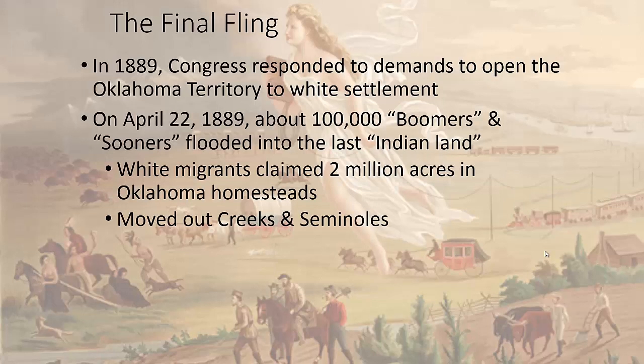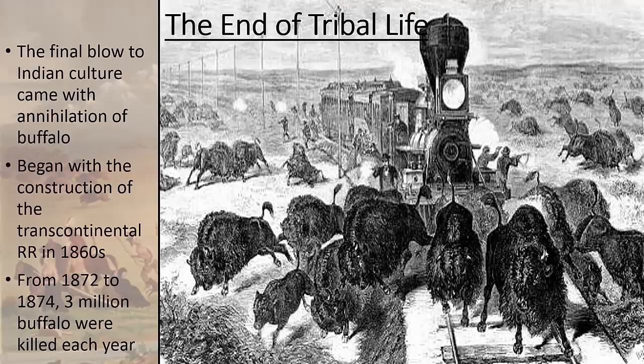In the late 1880s and early 1890s, Congress opens up the Oklahoma Territory, previously set aside for Native Americans from the Trail of Tears, and 100,000 boomers and Sooners flood into the last of the Indian land. White migrants claim 2 million acres, and the Creeks and Seminoles — two of the civilized tribes — get slowly moved out. This comes at the same time as the overhunting of the buffalo leads to their near extinction, really challenging the way of life for Native Americans.